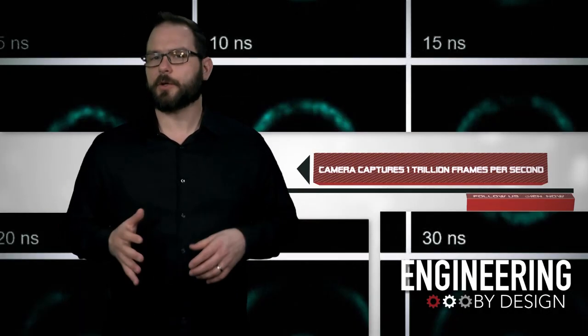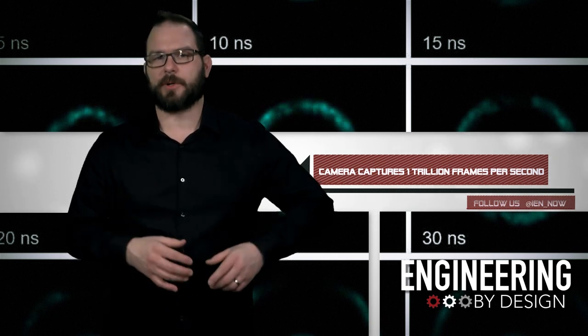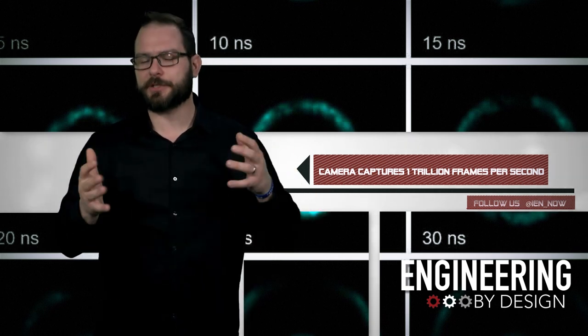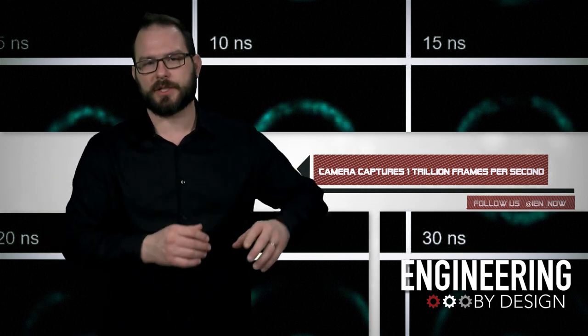Last year, Caltech researcher Li Hong Wang created the world's fastest camera. It can take 10 trillion pictures a second. It's fast enough to capture light traveling in slow motion.